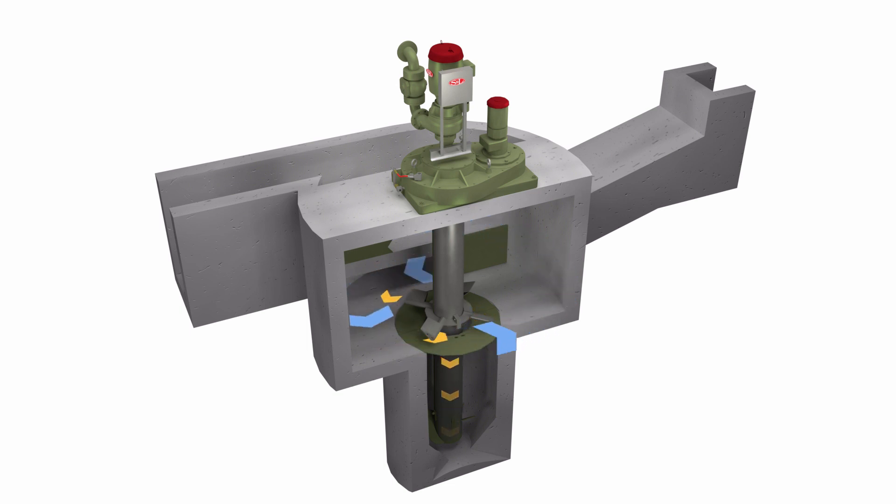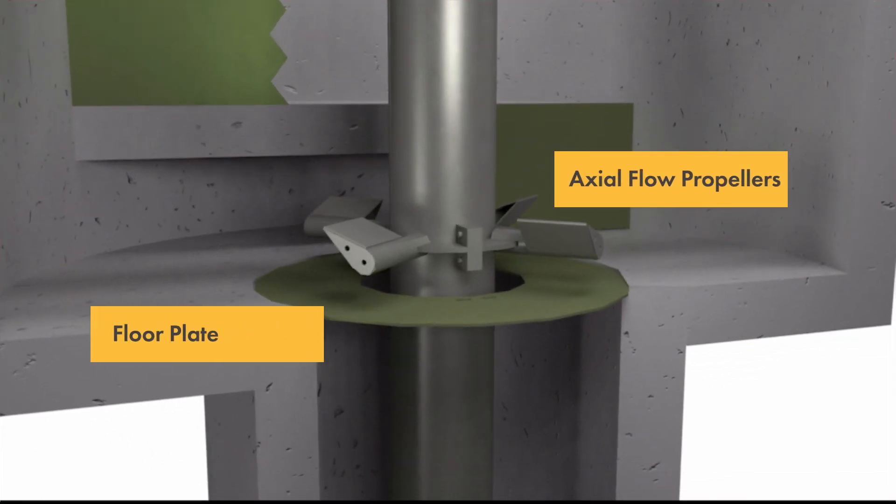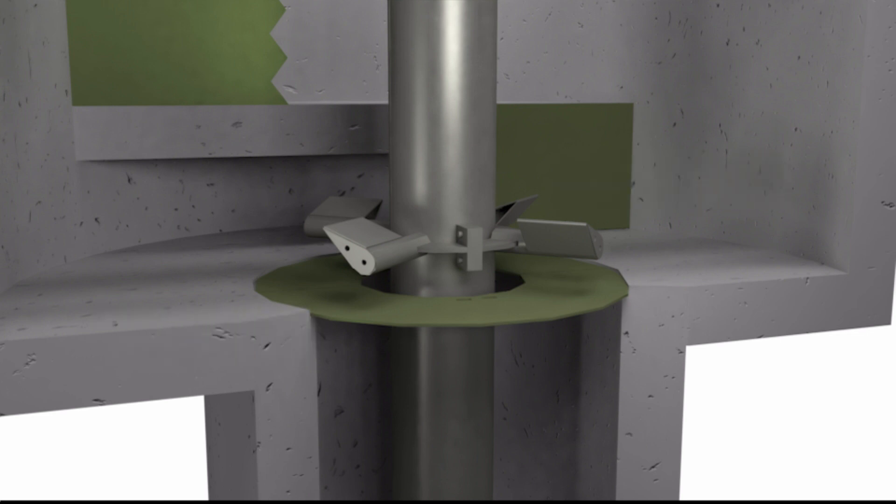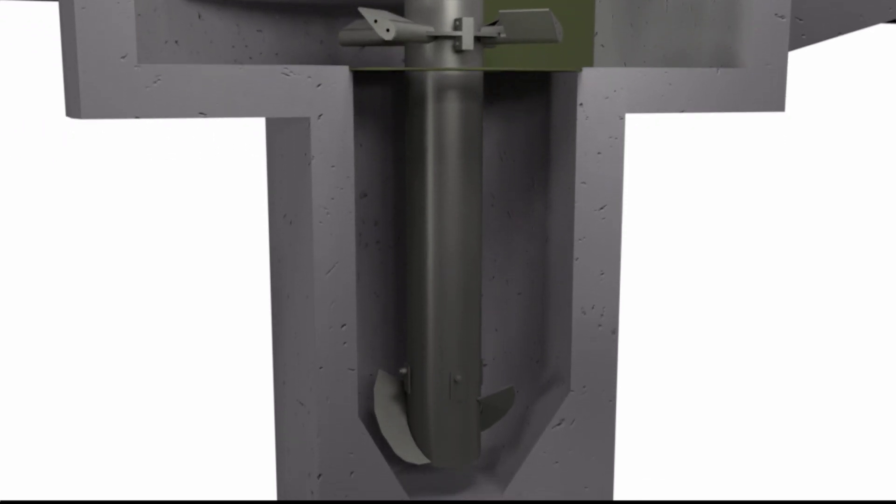The removable floor plates provide a flat floor for grit travel and capture into the hopper, along with easy access for maintenance. The grit hopper has a sloped bottom to ensure mixing of the grit.